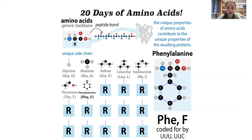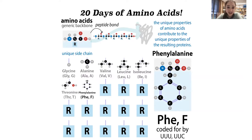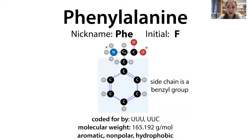This is part of 20 Days of Amino Acids and I was using phenylalanine as an excuse to teach about aromaticity — that's one of my favorite things about the series, introducing concepts in context. So phenylalanine's three-letter abbreviation is PHE and its one-letter code is F. P was taken by proline, which we'll see later.